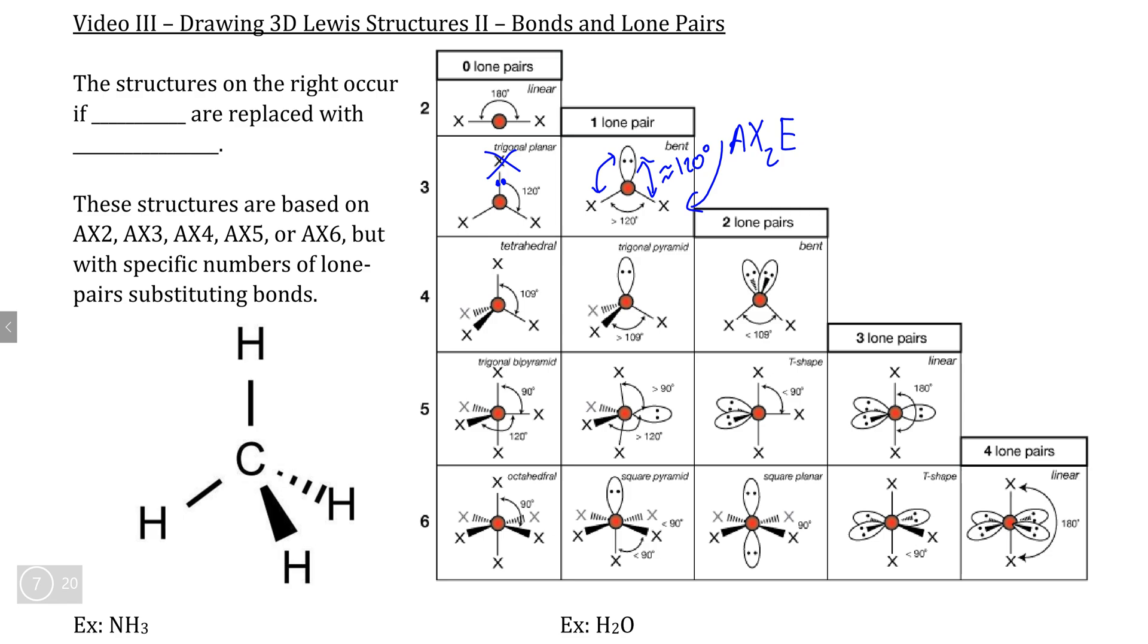Using this idea, if we understand that all of these structures here on the right end of the table simply are derived from where we replace a bond, at least one bond within the AX3, AX4, AX5, or AX6 structure with at least one lone pair or more than one lone pair, the geometry becomes fairly predictable. This is easier to understand when we actually take a look at an example.